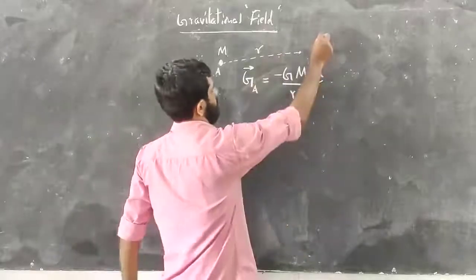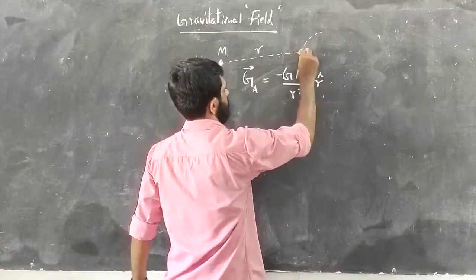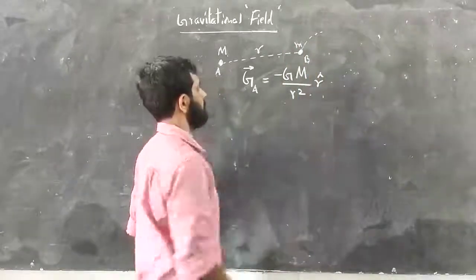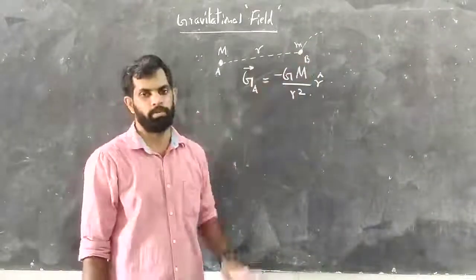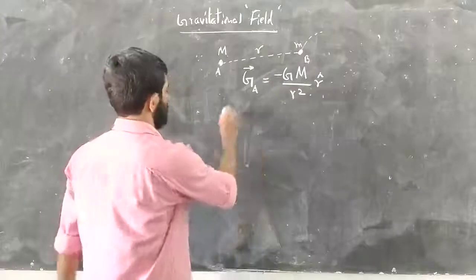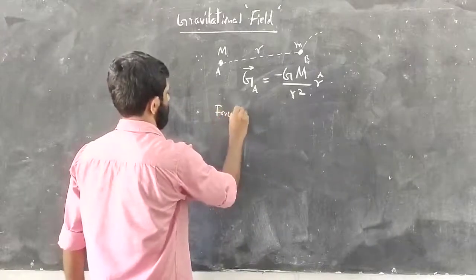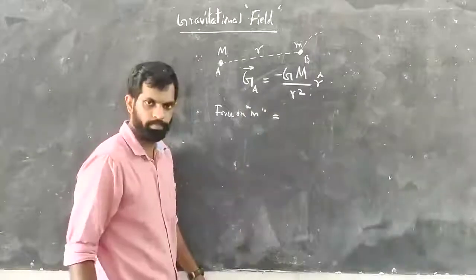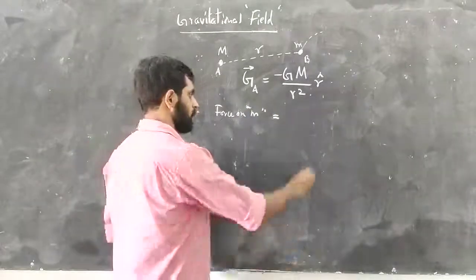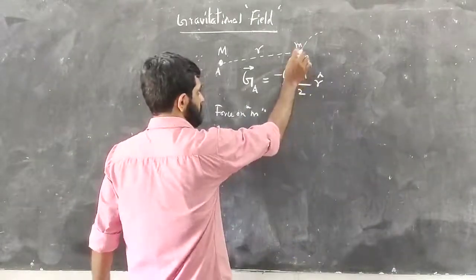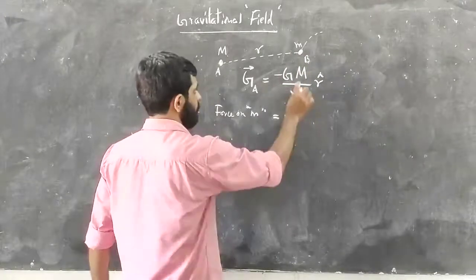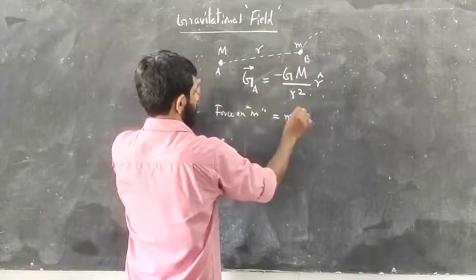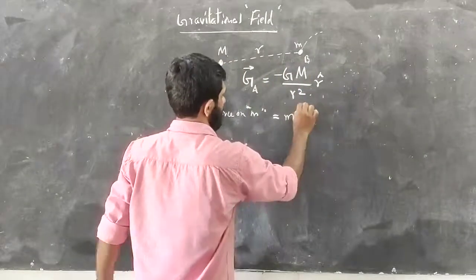Now, if we place a small mass at any point, the force on that small mass is simply the small mass times the gravitational field gA. So the force on the small mass equals m times gA.